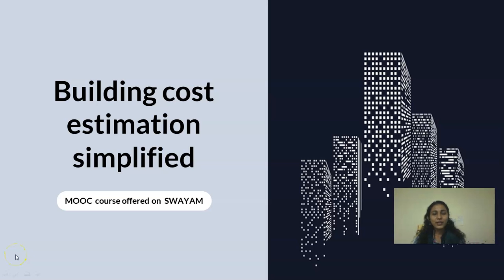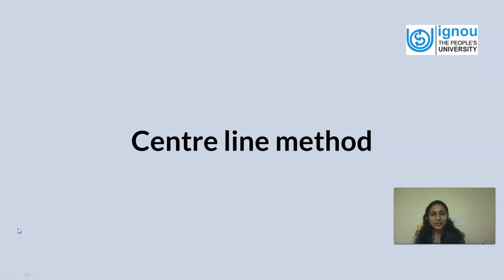Hello and welcome back to our online course, Building Cost Estimation Simplified. In our previous video lesson we saw a method of taking measurements of a building called the long wall short wall method. In this video lesson we are going to introduce another method of taking measurements of a building — the quantities of various items in the building. The method we are going to learn today is the central line method. Let's see the lesson objectives of this video lesson.